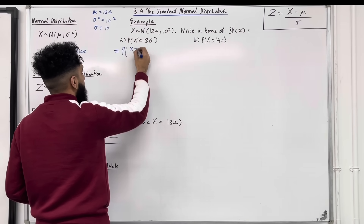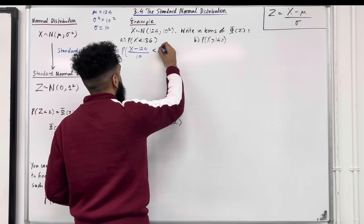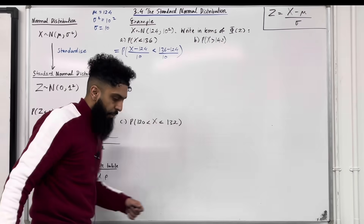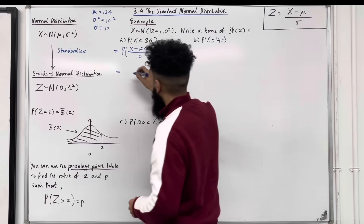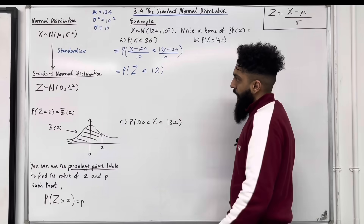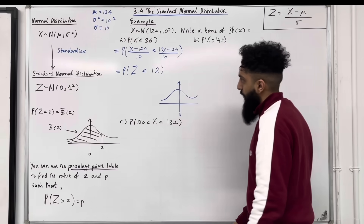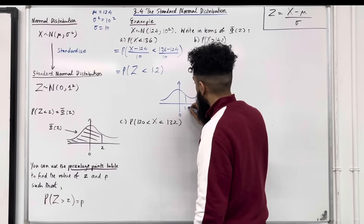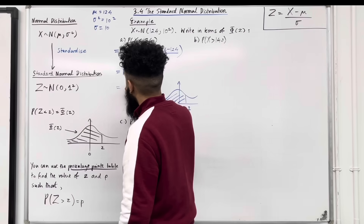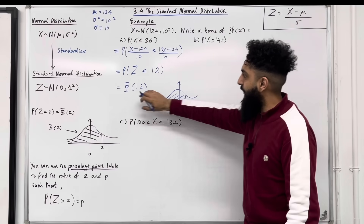So here is my first step. I take X, subtract the mean 124, and divide by the standard deviation 10. This must be less than 136 minus 124, divided by 10. The left-hand side represents capital Z, so we have probability capital Z is less than 1.2. On the bell-shaped curve centered at 0, 1.2 is positioned to the right. The area to the left of 1.2 is probability Z is less than 1.2, which is the same as writing phi of 1.2. So we've expressed this probability in terms of phi of Z, where Z is 1.2.